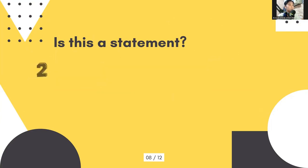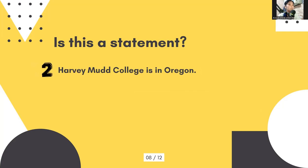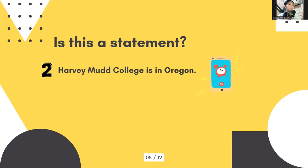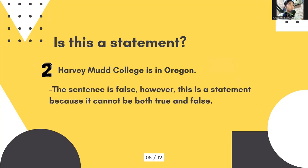Number two: Harvey Mudd College is in Oregon. The sentence is false. However, this is a statement because it cannot be both true and false.